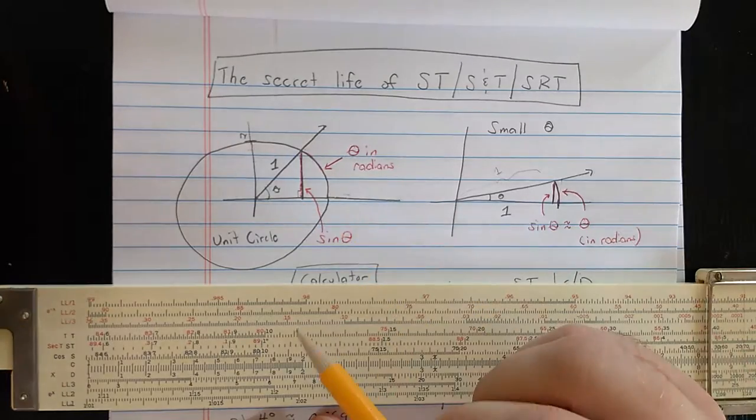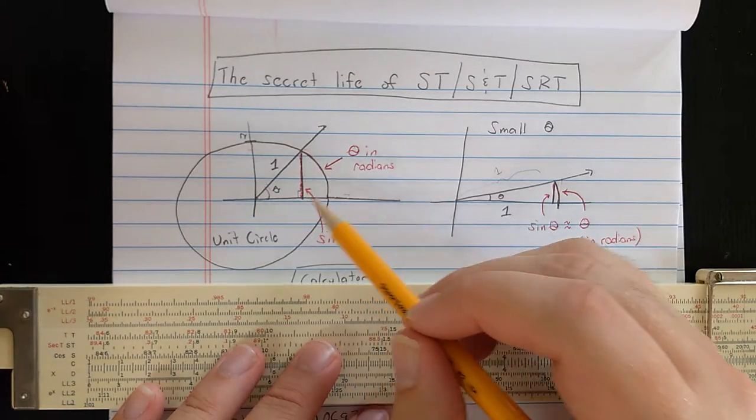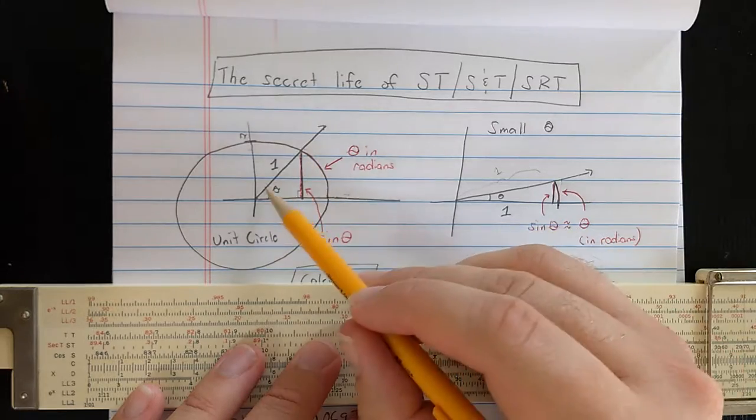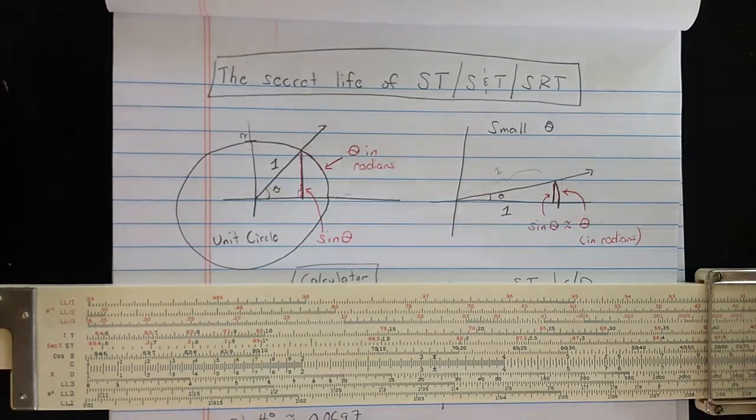So sine of theta is that height. Another way to reconcile this, if you only know about right triangles, is sine of theta should be this over one, so sine of theta is simply this height.